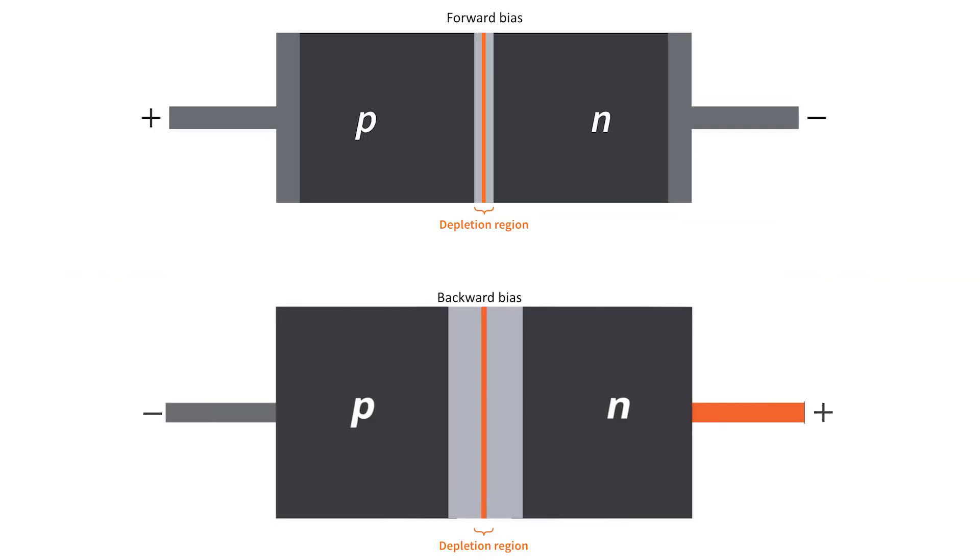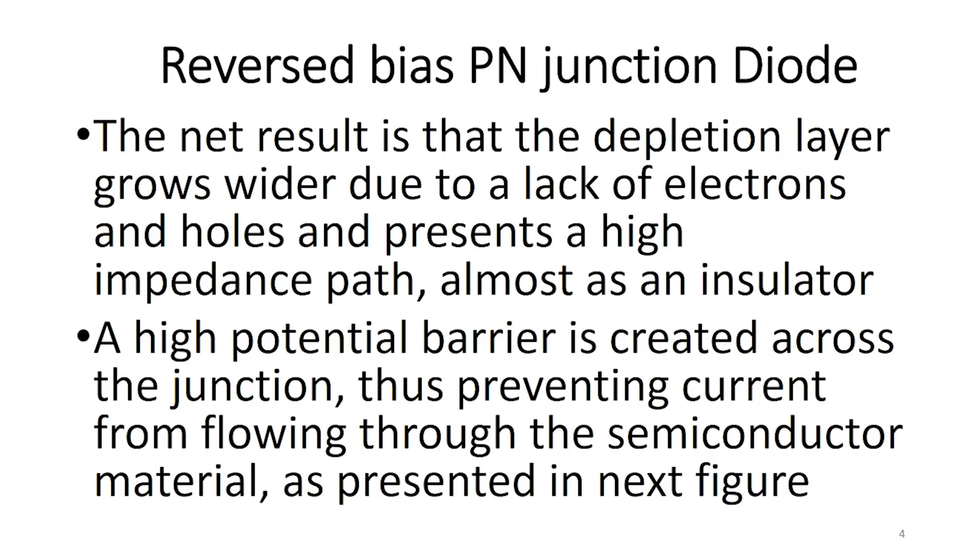The net result is that the depletion layer grows wider due to a lack of electrons and holes and presents a high-impedance path, almost as an insulator. A high-potential barrier is created across the junction, thus preventing current from flowing through the semiconductor material as presented in the next figure.